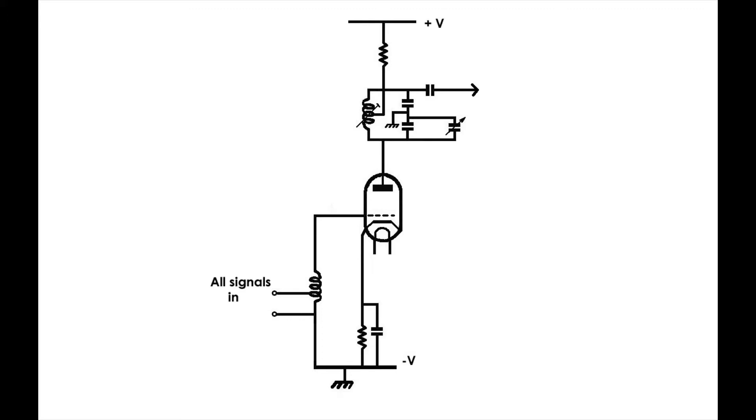The incoming signals are taken in on the little coil there, and that will take all signals that the aerial receives. But because of the tuned tank circuit, only the selected frequencies will be amplified and taken out of the top of the tank circuit.